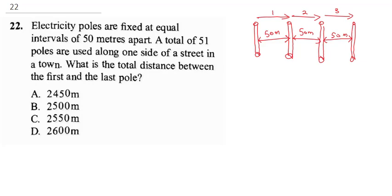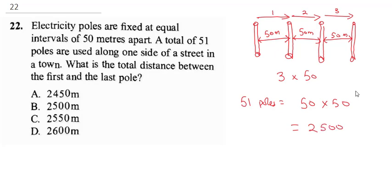Four poles give you three distances. So for four poles it would be three times 50. But we are being asked for 51 poles, so we do 50 times 50 — because the first pole does not count as an interval — and that gives us 2,500 meters. The correct answer is B.